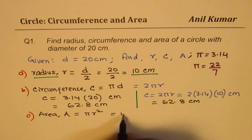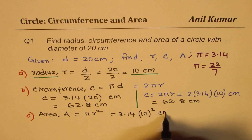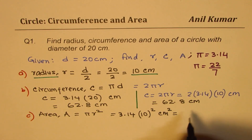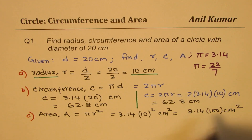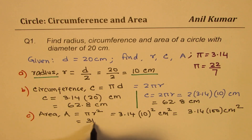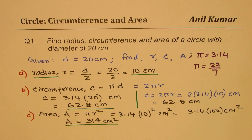For us, π is 3.14, and the radius is 10, with units centimeters squared. 10 squared means 100, so 3.14 times 100 gives us 314 centimeters squared. So, we get 314 centimeters squared as the area. These are the three solutions for question one.